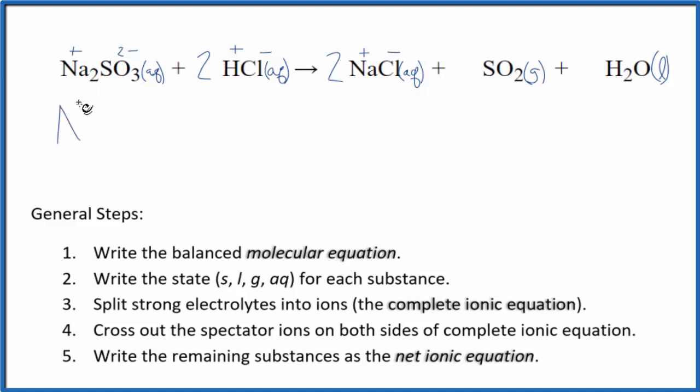We have Na plus, but that 2 means we have 2 of those, plus SO3 2 minus. That's the sulfite ion. Plus, we have H plus and Cl minus. The 2 means we have 2 of them. So we have 2 H plus ions, hydrogen ion, plus 2 of the chloride ions, Cl minus. So these are the reactants.